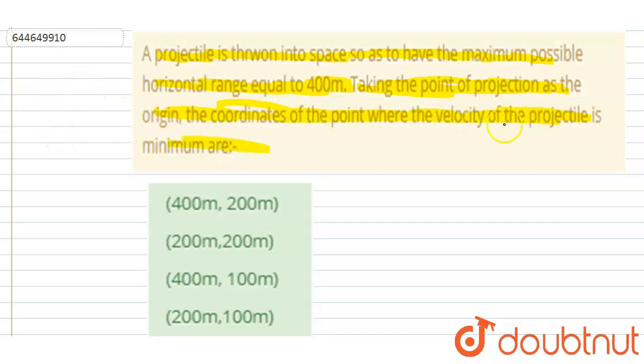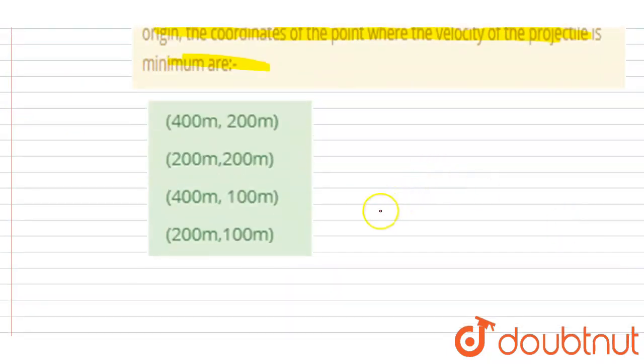So we know that in projectile motion, the particle has minimum velocity at maximum height, because the horizontal velocity will always be the same throughout the motion and the vertical velocity will change while going up and increases when it comes down.